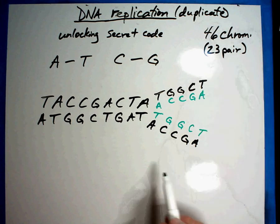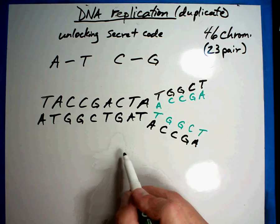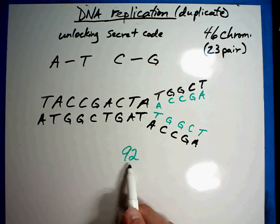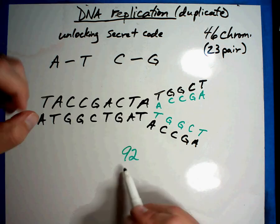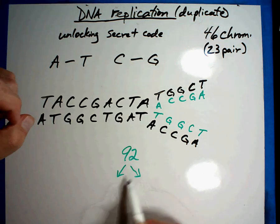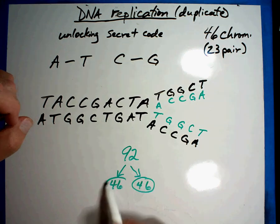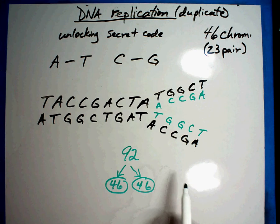And so what ends up happening is you have a cell that no longer has 46 chromosomes. It has 92 chromosomes. Well, a human cell cannot have 92 chromosomes in it. So it's going to have to split into two. And what's going to happen is that you're going to get two cells that each have 46 chromosomes, and they look just like the original.